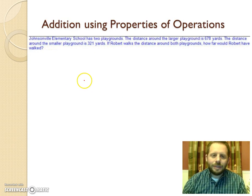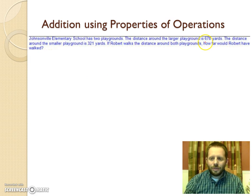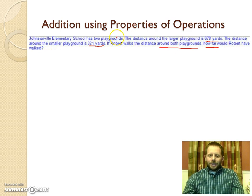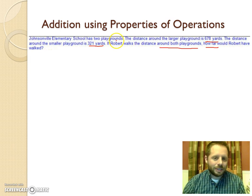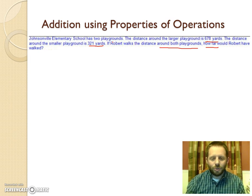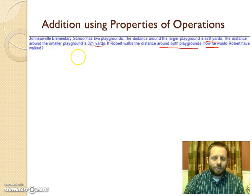Let's look at another method for the same problem - still the 678-yard and 321-yard playgrounds, still finding how far Robert walked. This time we want to use the properties of operations. Think about your different properties: the commutative property allows you to rearrange the order of values in addition, and the associative property allows you to group different parts of the problem together.